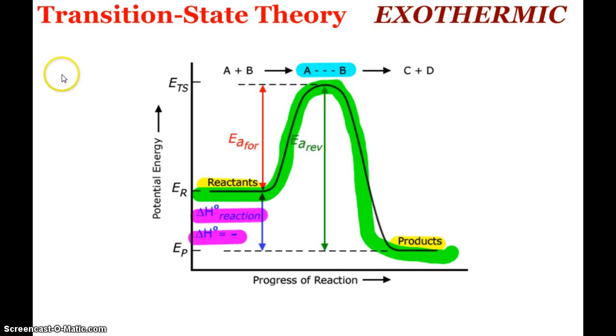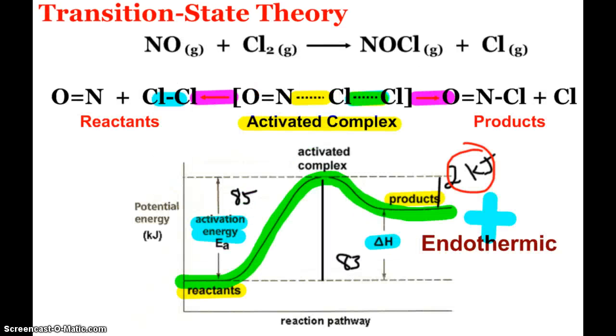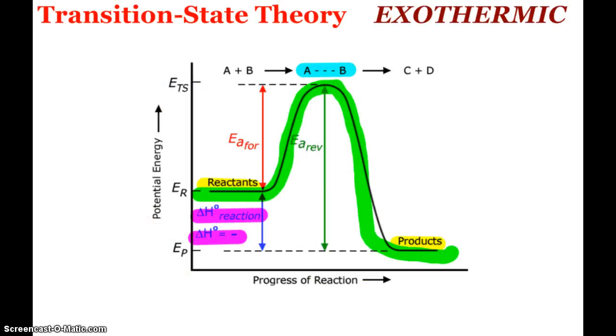Transition state theory and collision theory are explaining why reaction rate is affected by temperature. These potential energy diagrams are pretty common - there's my exothermic version and endothermic version. It's trying to explain on the molecular level what is going on, why we see the reaction rate increasing with a temperature increase.